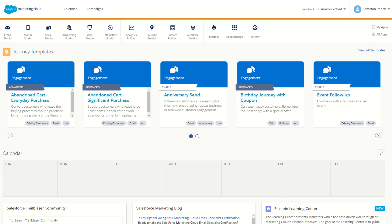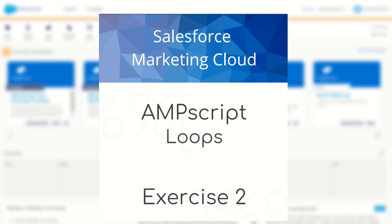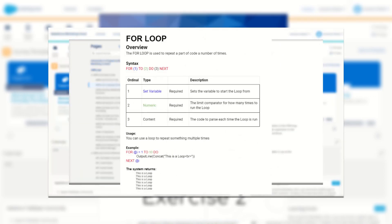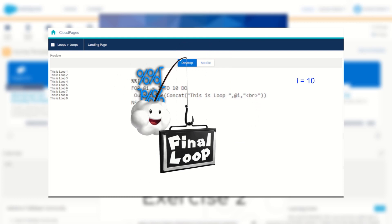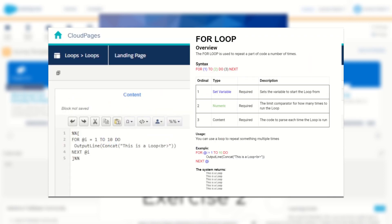G'day Trailblazer, my name is Cam and in this video we'll be doing another exercise in Salesforce Marketing Cloud, this time covering process loops in Ampscript. Just like my previous exercise we'll be going through a brief together to show how we can use loops in our emails and cloud pages. I have covered this topic before in a video, so do check out my video on process loops in Ampscript before you try out this challenge.